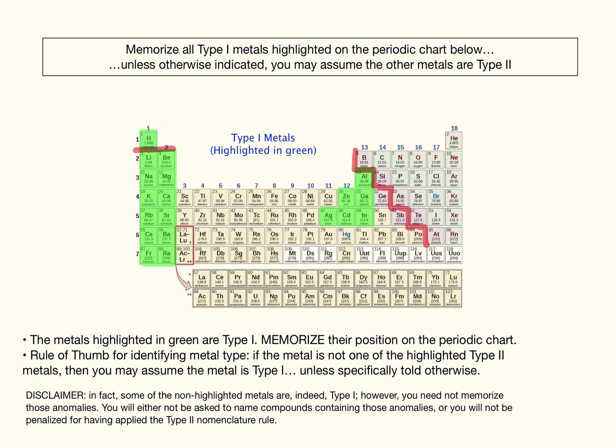What we're going to do is just memorize a few of the Type 1, which ones that are very easy to block out on the periodic chart. And for this class, unless told otherwise, you're allowed to assume every other metal that's not a Type 1 is a Type 2. So let's go over what you need to memorize.